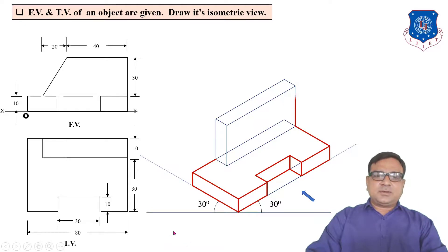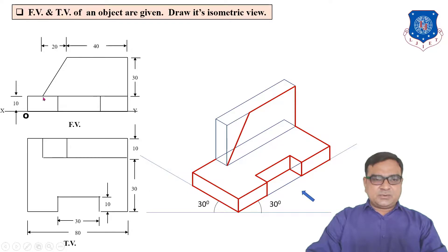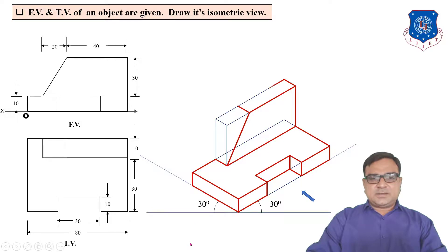Now for this block, draw a vertical line from this point. This block has a length of 40 mm, so go 40 mm and join this point to the bottom of the plate. This is 10 mm thickness — insert this line, and you have to join these two corners.